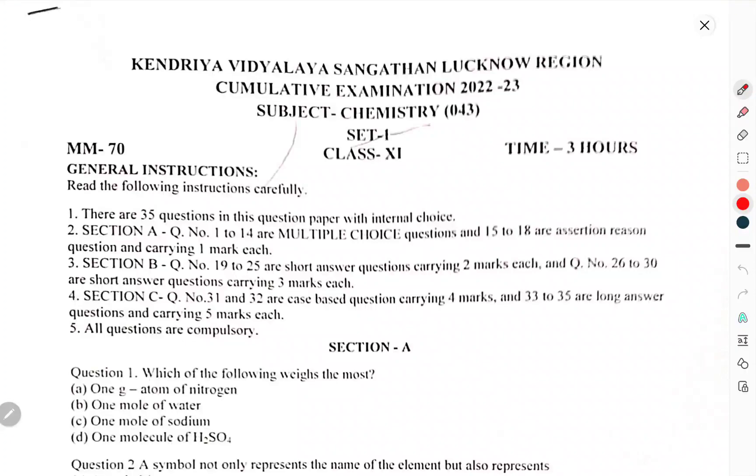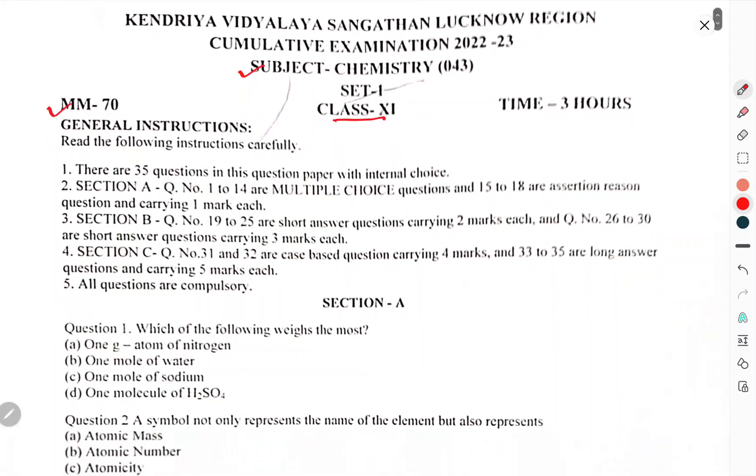Now we have to discuss the cumulative examination 2023, Subject Chemistry, Class 11th, Set 1. Maximum marks 70, time is 3 hours. General Instructions.